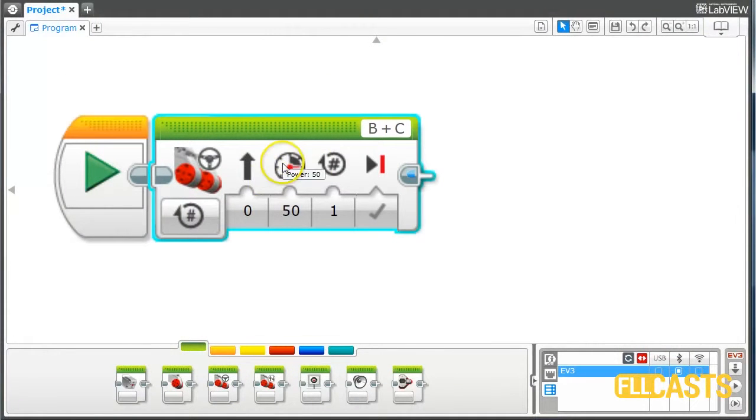That's the move steering block and with this block, it's controlling port B and C, and these are the two ports where our motors are connected. So if we start for three rotations with the power of 50, we'll try to download and to see what happens with our robot.